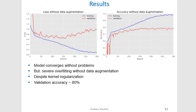Here are the results without data augmentation. Because of the large number of parameters, I saw severe overfitting — the model converges initially without problems, but then training loss and accuracy diverge from validation. Despite the severe overfitting, validation accuracy was around 80%.